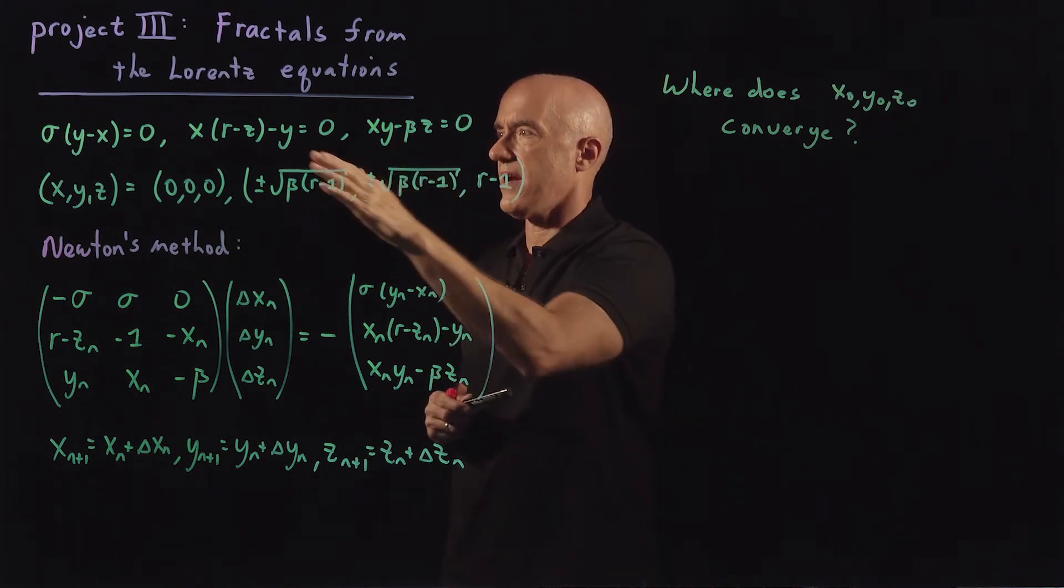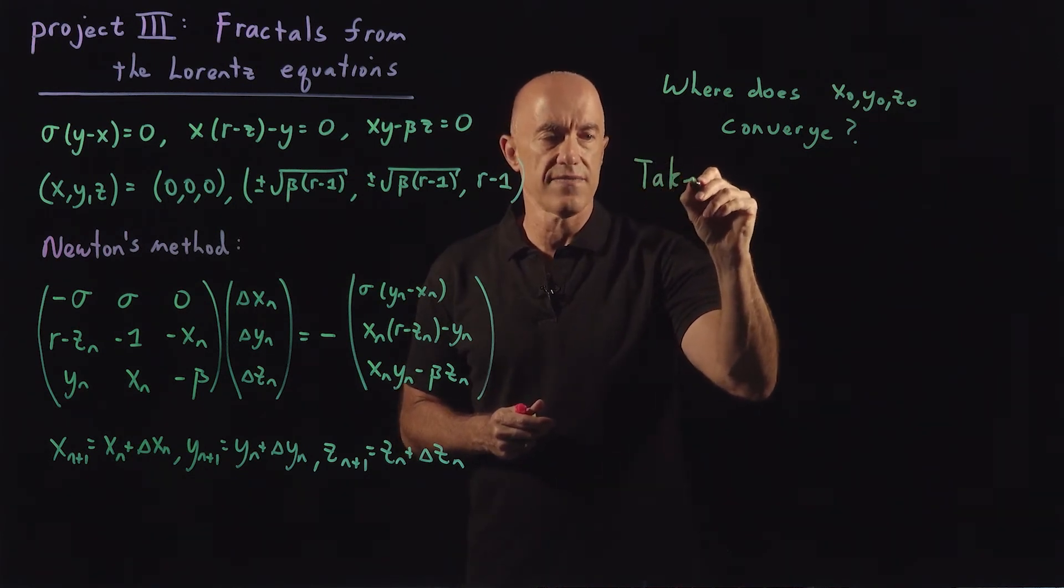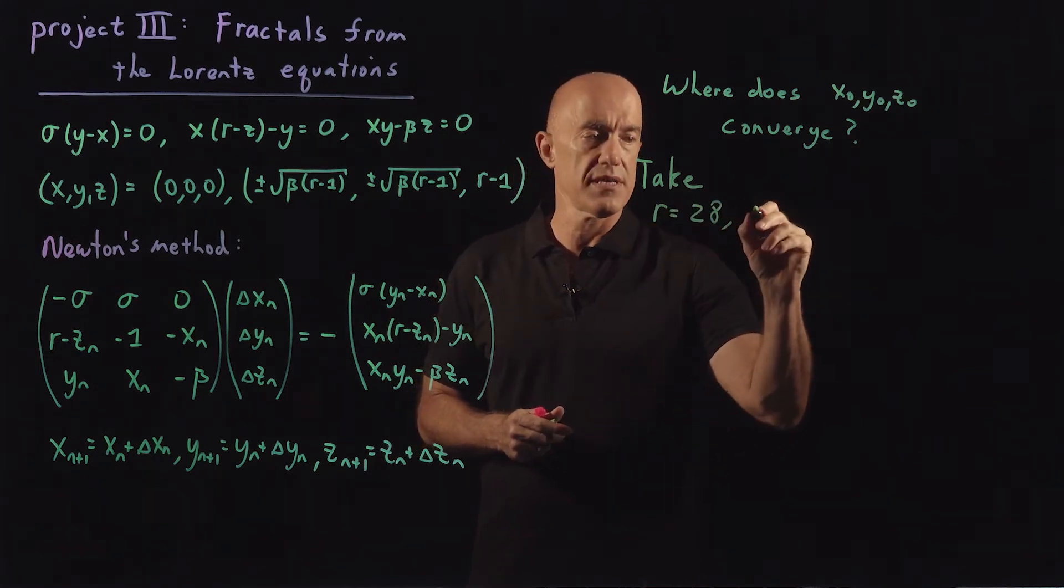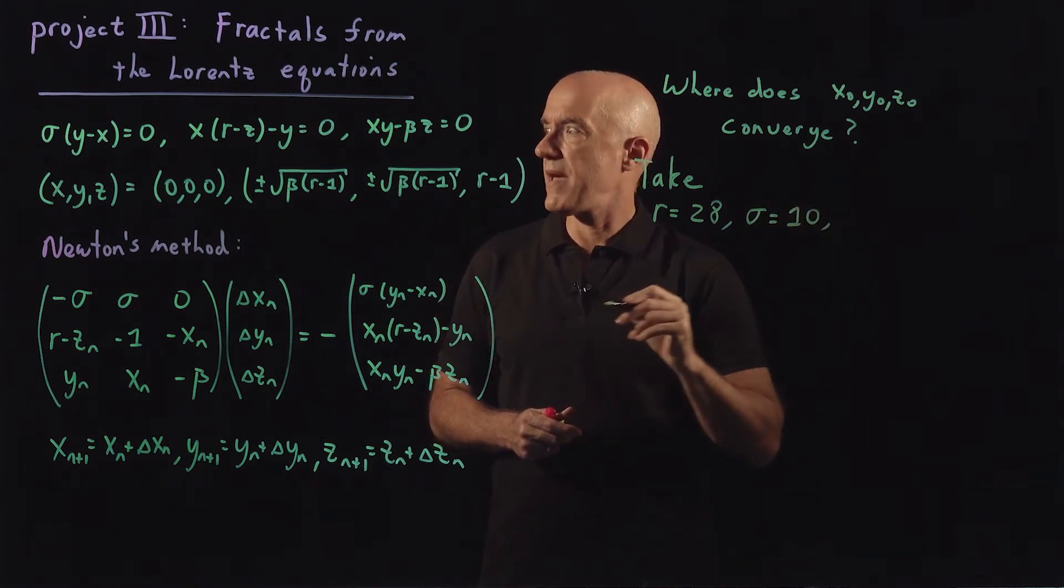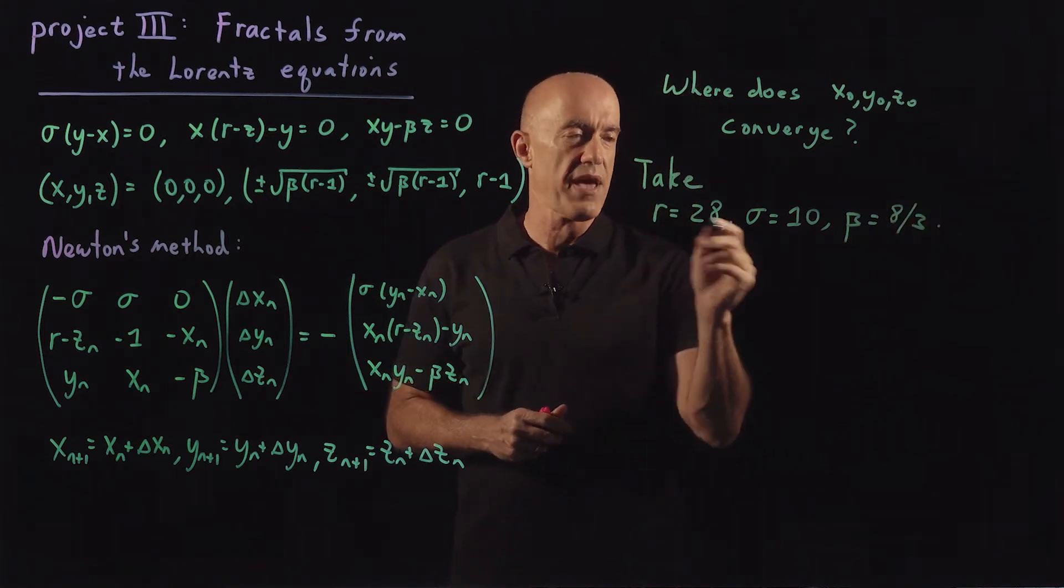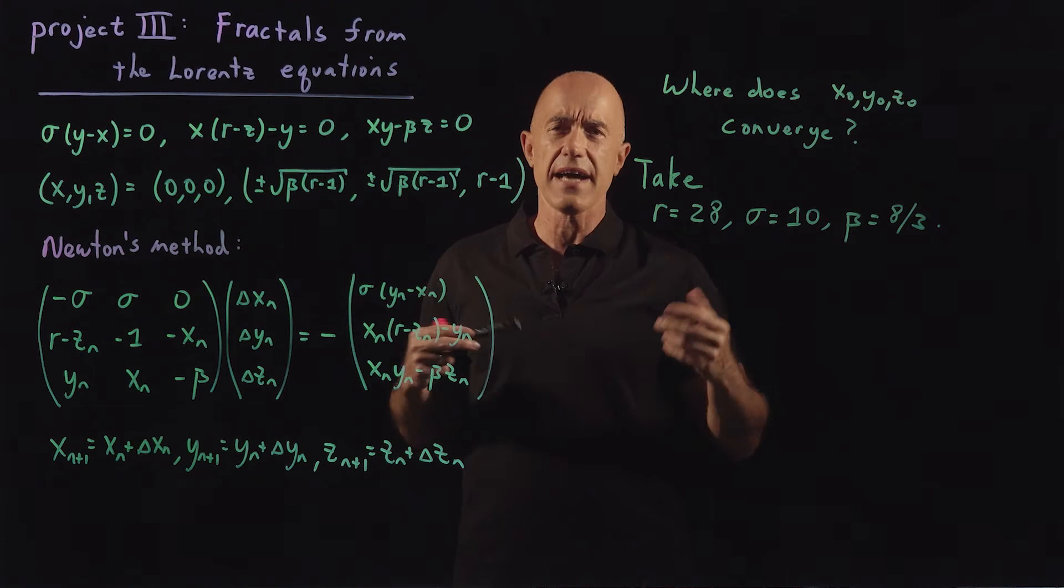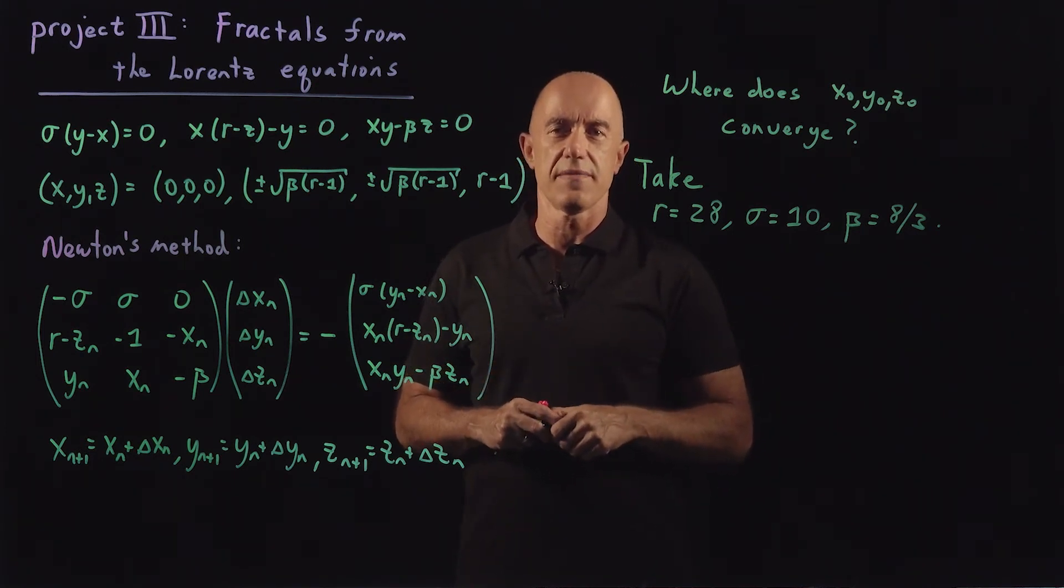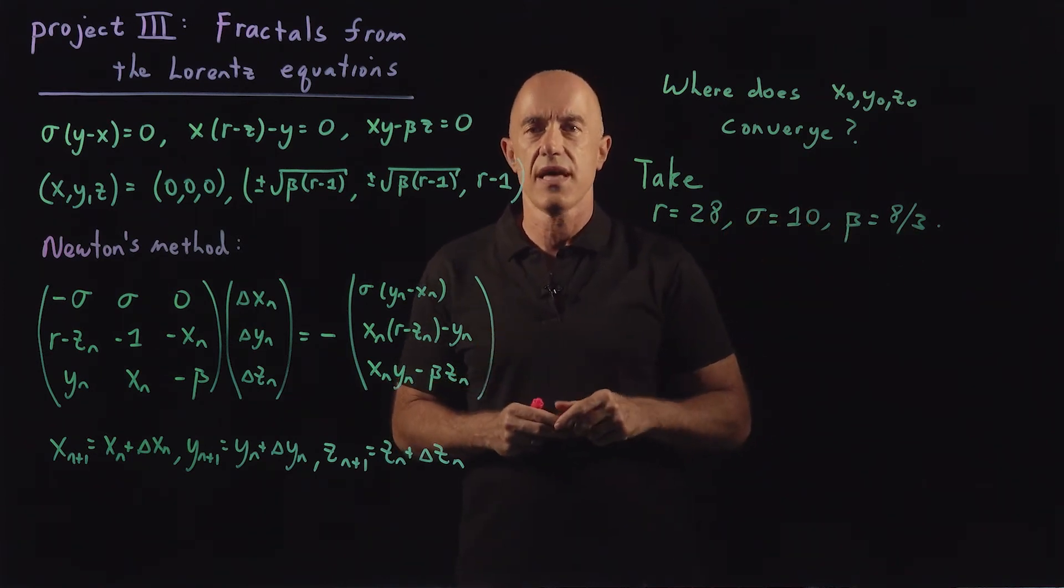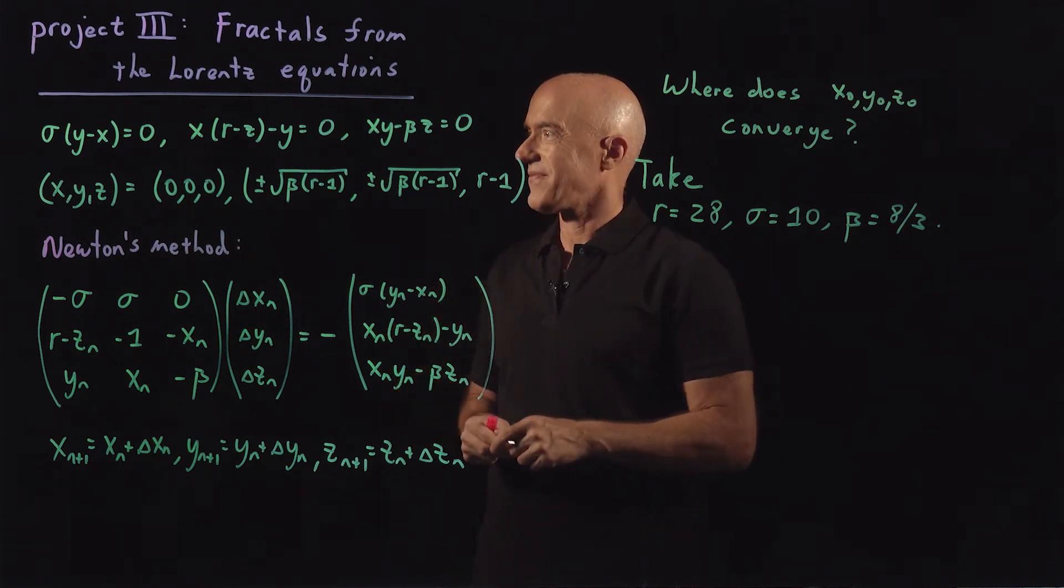Okay? So we need some parameters here. We have r, sigma, and beta. So there are some classic values for these parameters: r is 28, sigma is 10, and beta is 8 thirds. These values come from Lorentz's original paper. Remember, he studied the numerical solution for these values. It was back in the 1960s. So computers were not so fast back then. But he chose to look at some particular value. And then following Lorentz, everybody uses the same value when they discuss this equation.